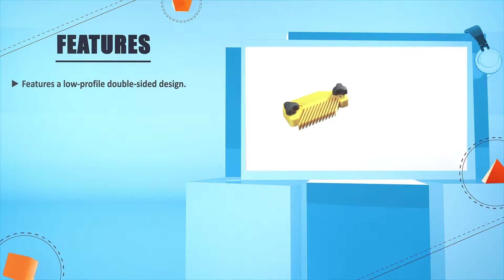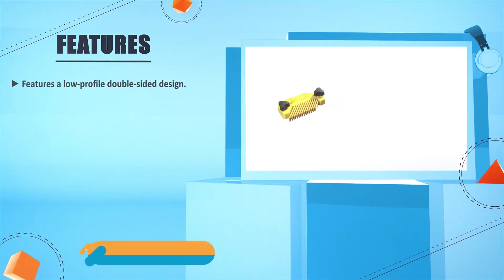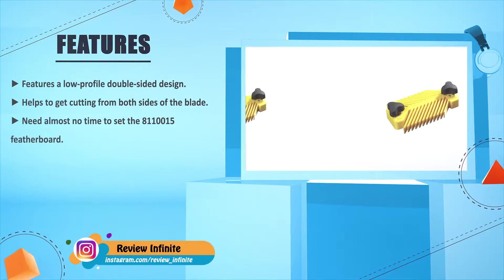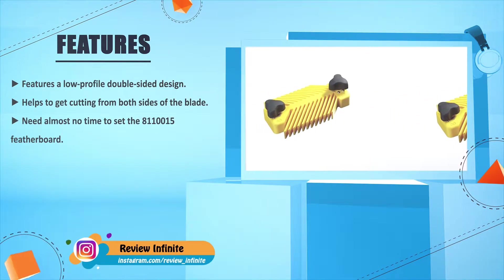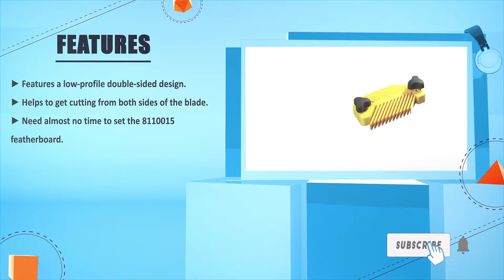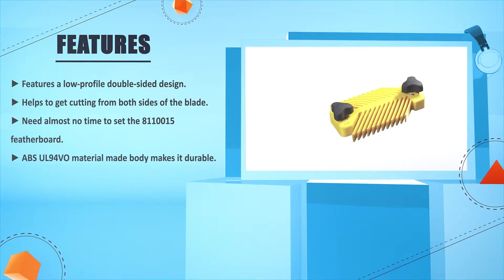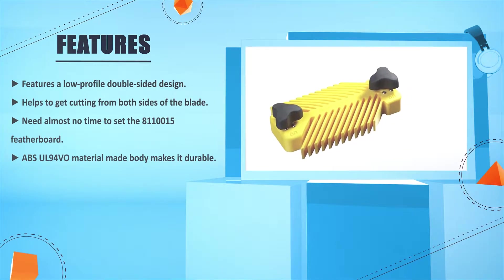Features a low-profile double-sided design. Helps to get cutting from both sides of the blade. Need almost no time to set the 8110015 featherboard. An ABS UL94V0 material made body makes it durable.